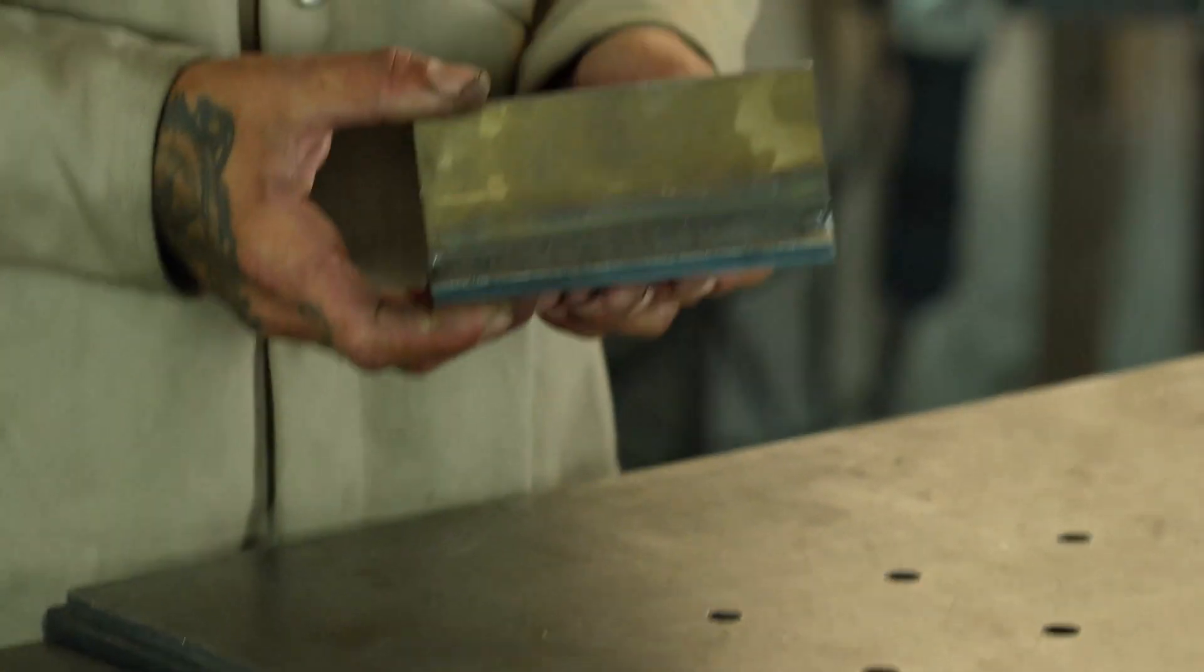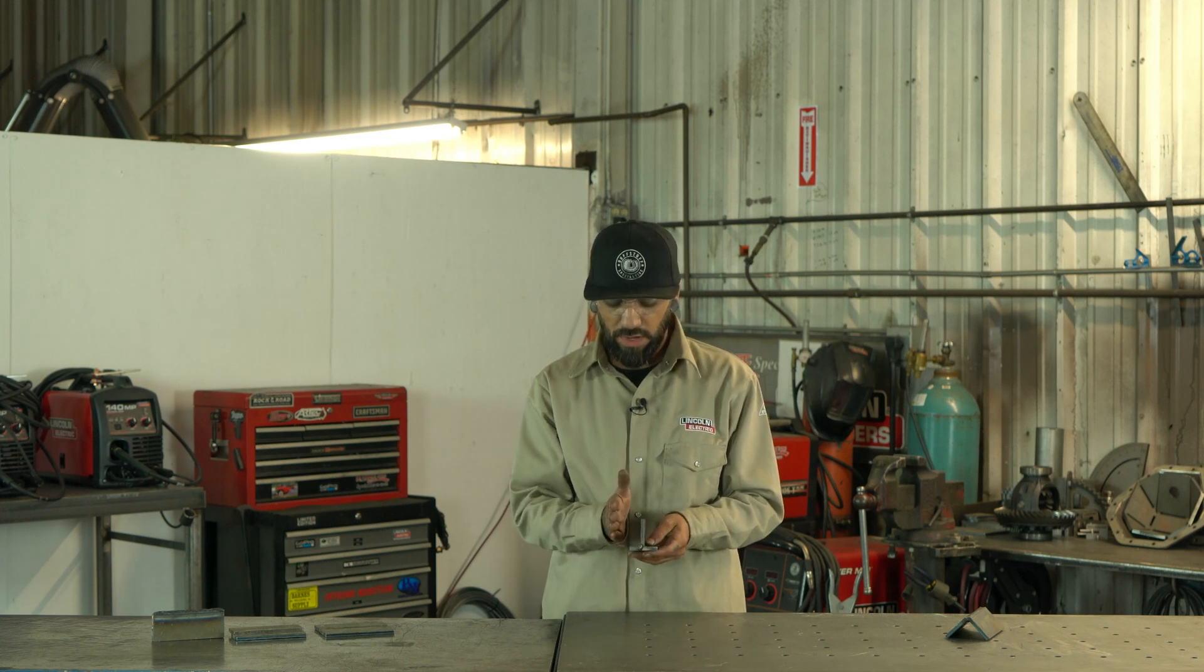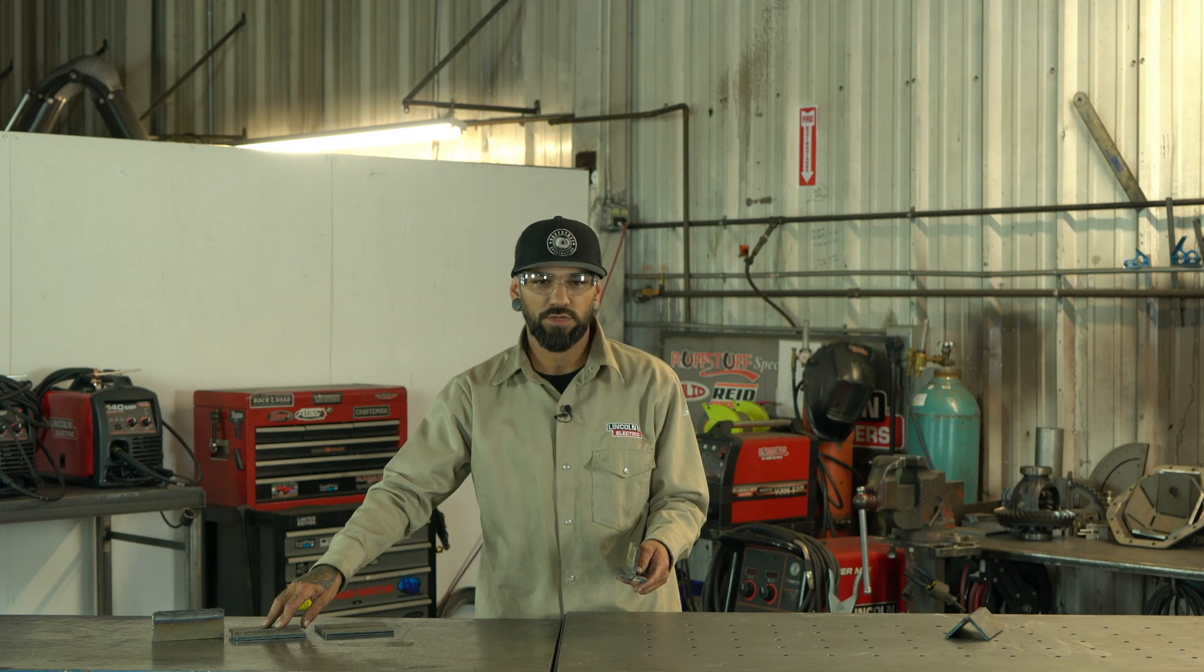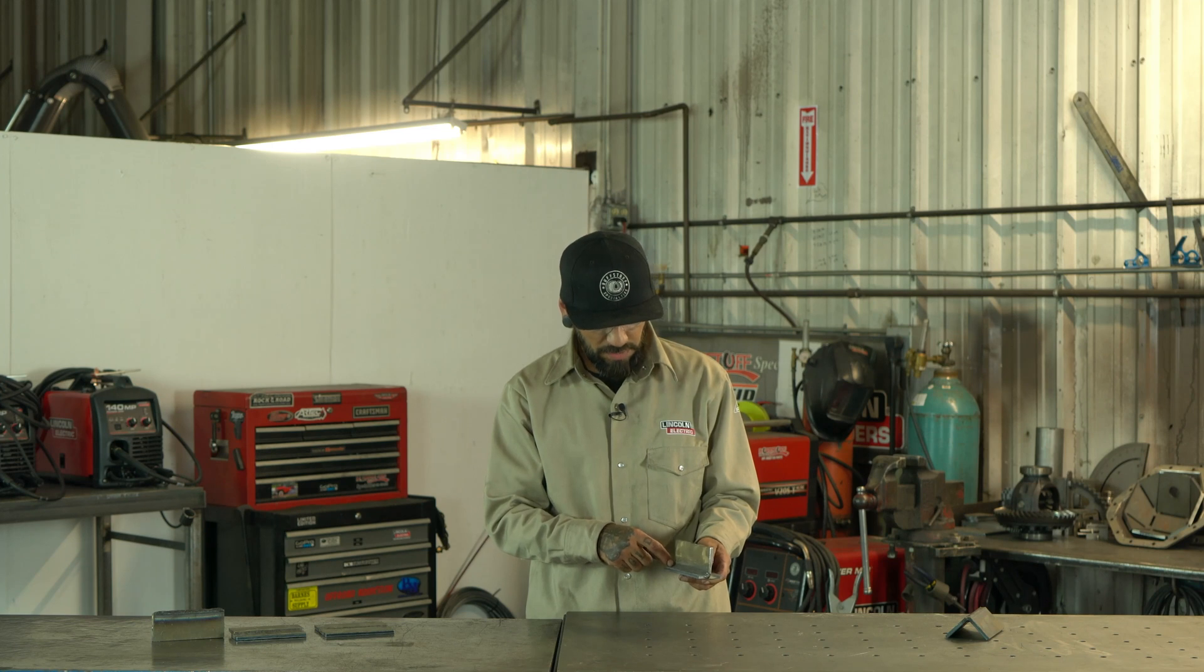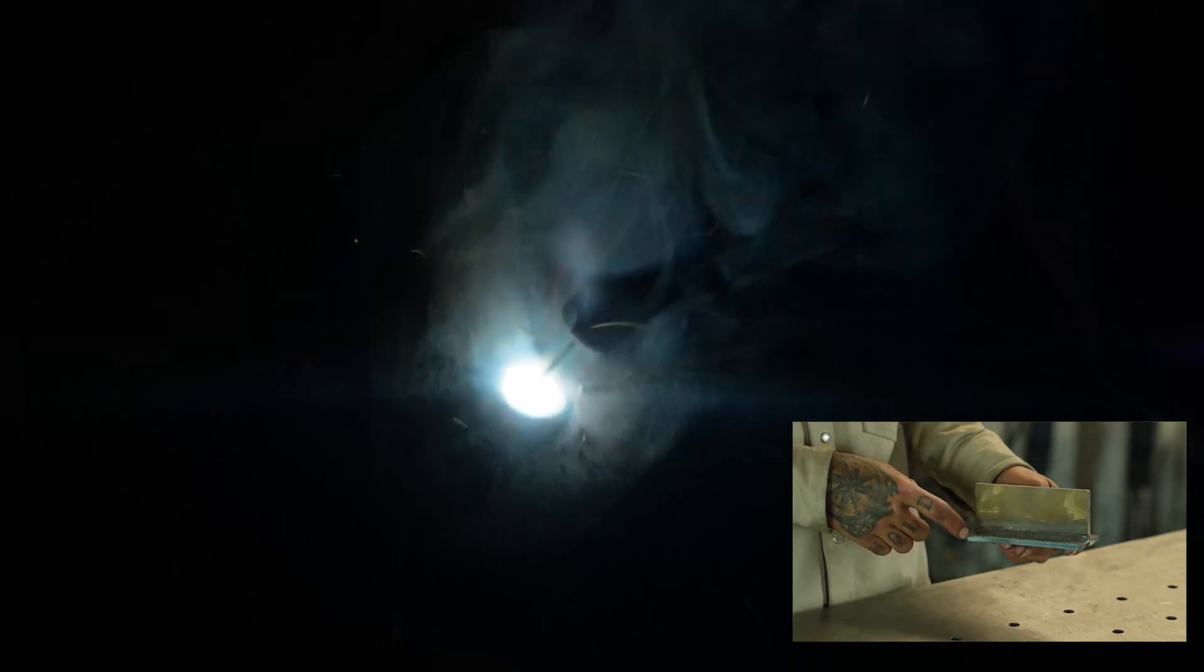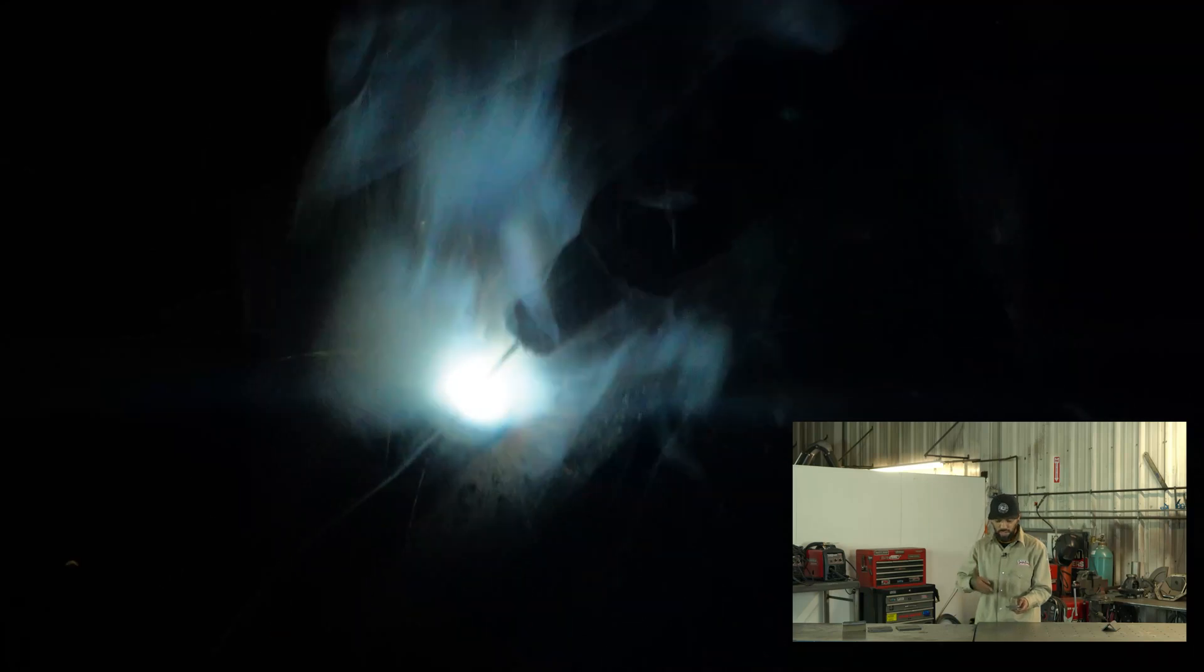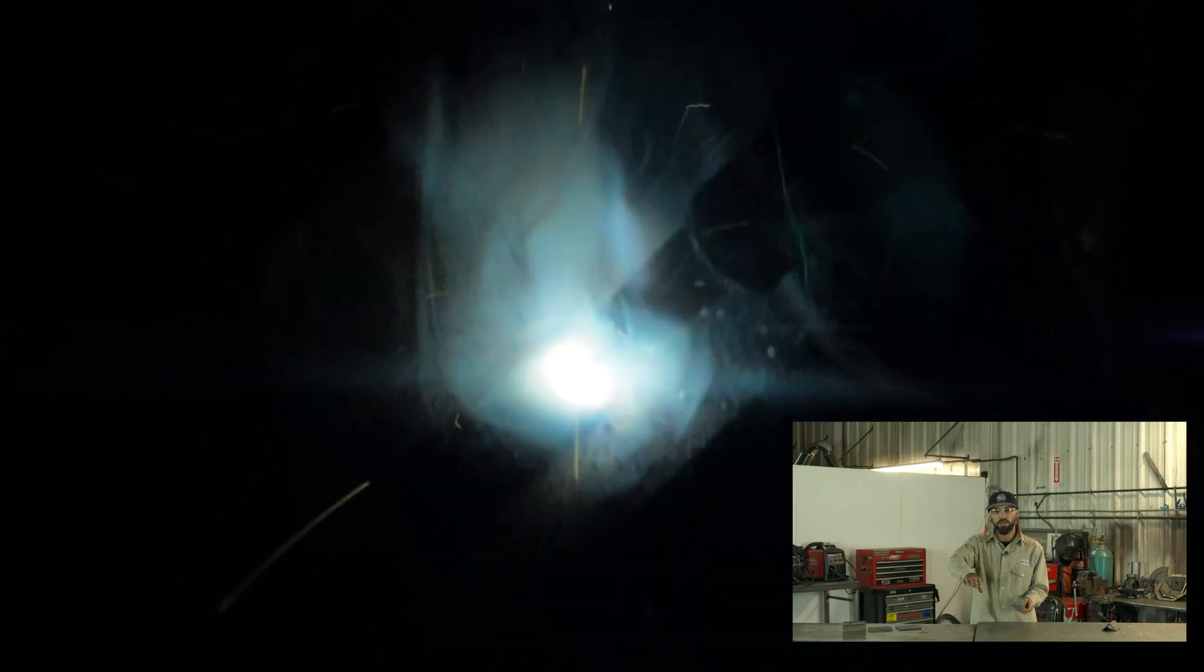Now we're going with the fillet joint or also called a T joint. All it is is you have a base plate and then you have your other plate at a 90 degree angle coming up from it. This one, same thing with the lap joint, my pattern is basically the same. I'm just starting on my base material wrapping into that seam, coming up, back down, up, down.